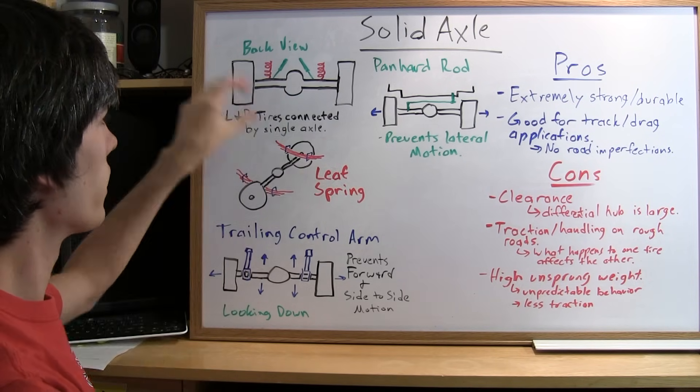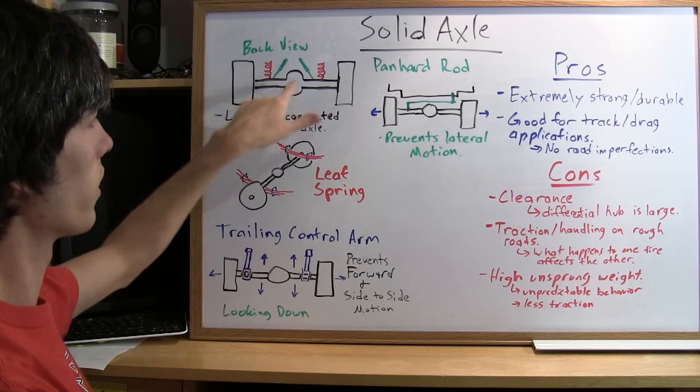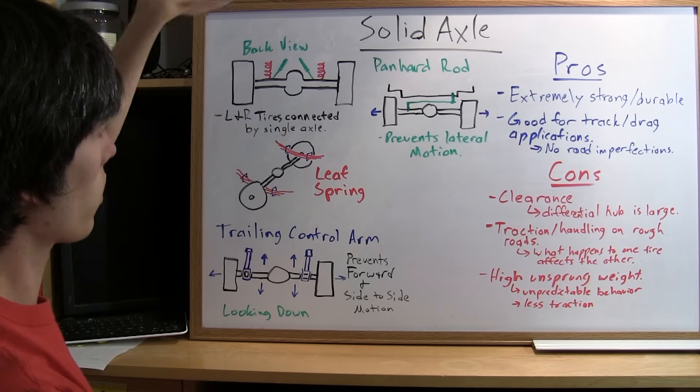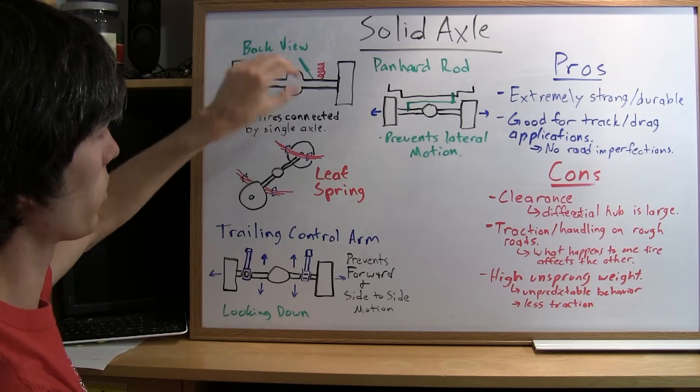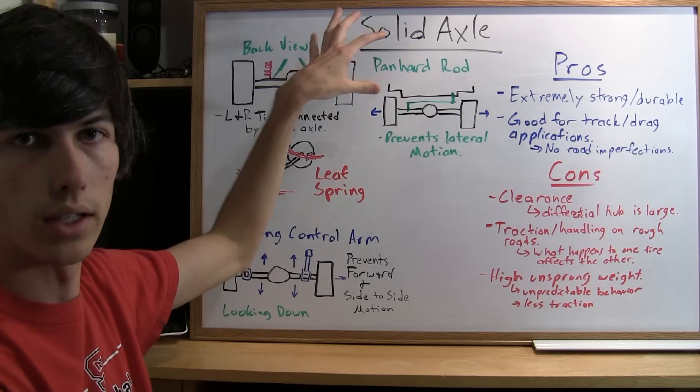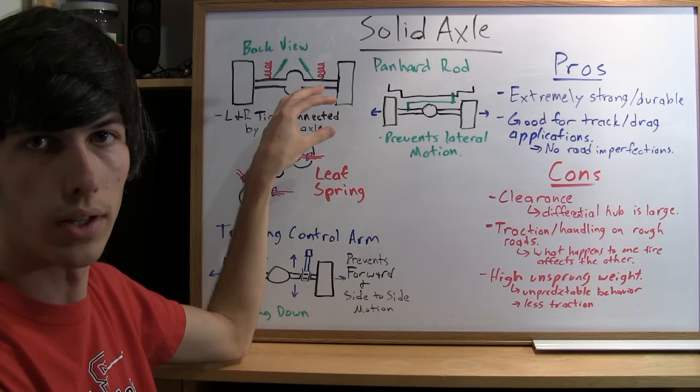The basic idea is that you have your left and right tires connected by a single axle, and the car will rest on top of shocks and springs which are connected to both the body itself and then to the axle.